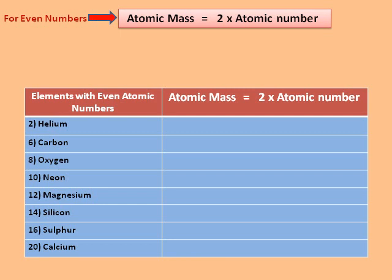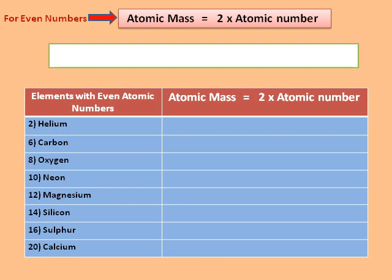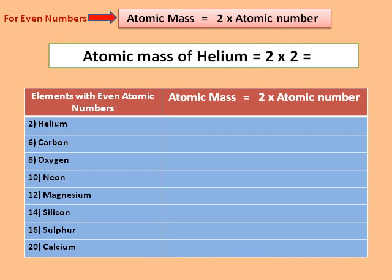Let's start with the atomic mass of elements with even numbers. We use the formula 2 × atomic number to find their masses. Atomic mass of helium is equal to 2 × 2 = 4.